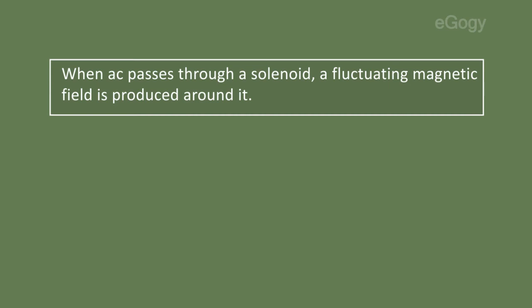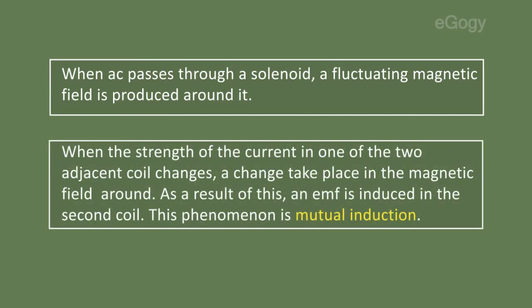...through a solenoid, a fluctuating magnetic field is produced around it. When the strength of the current in one of the two adjacent coils changes, a change takes place in the magnetic field. As a result, an EMF is induced in the second coil.